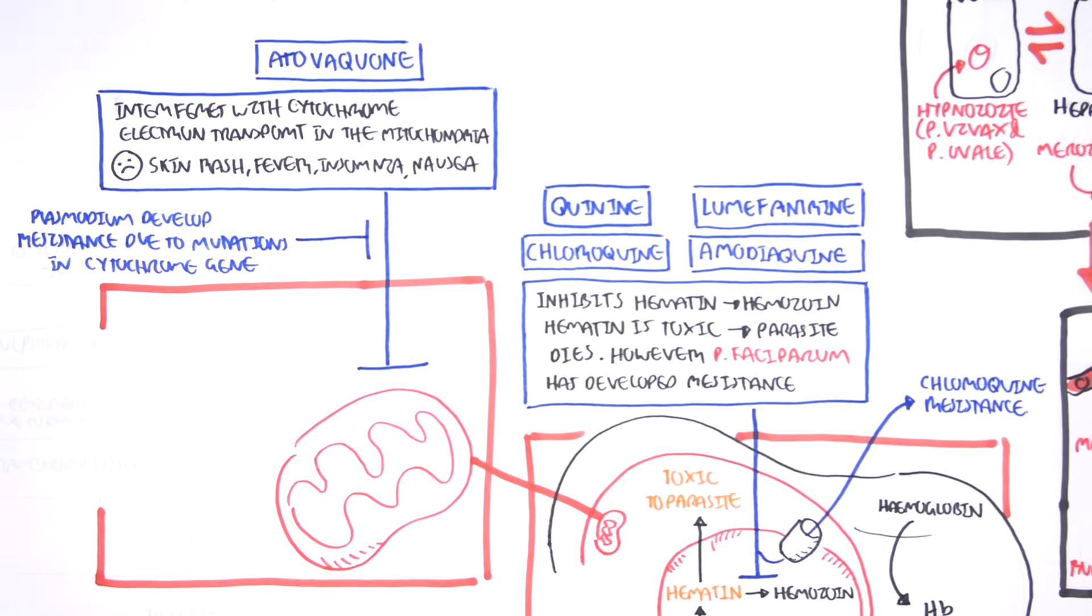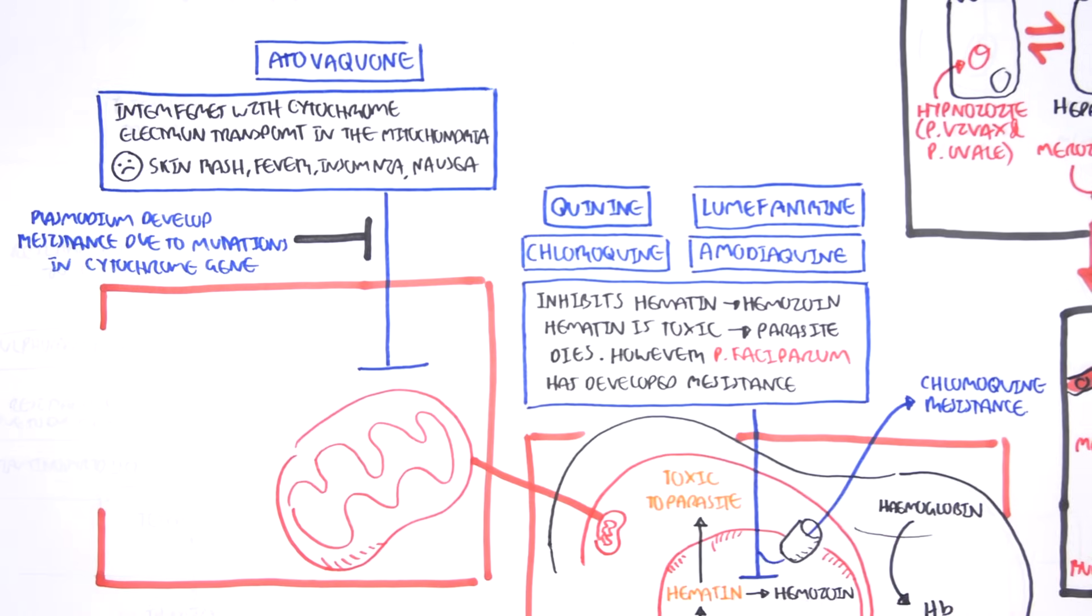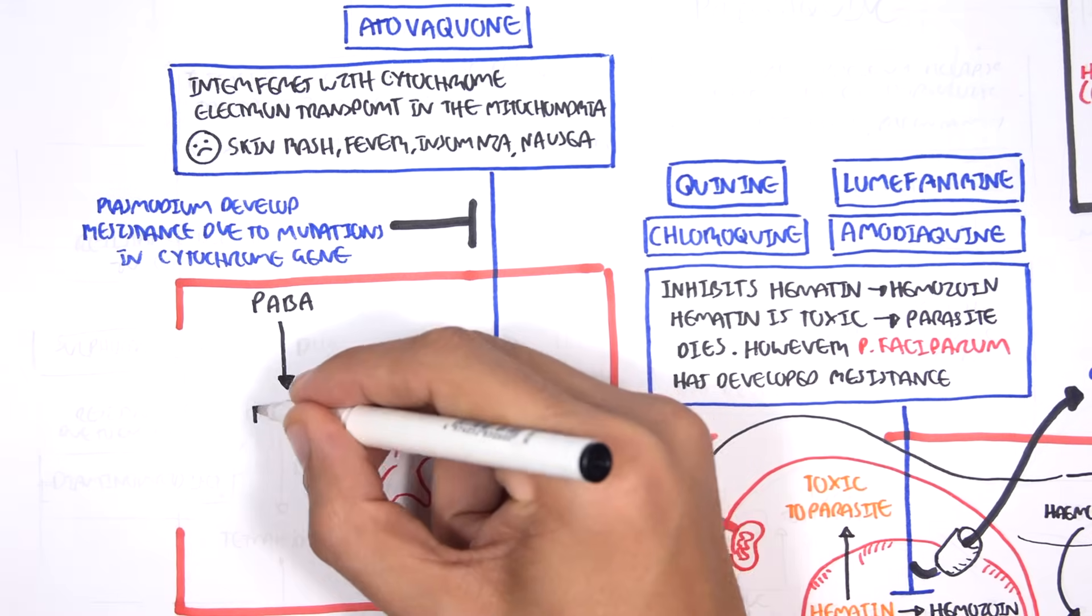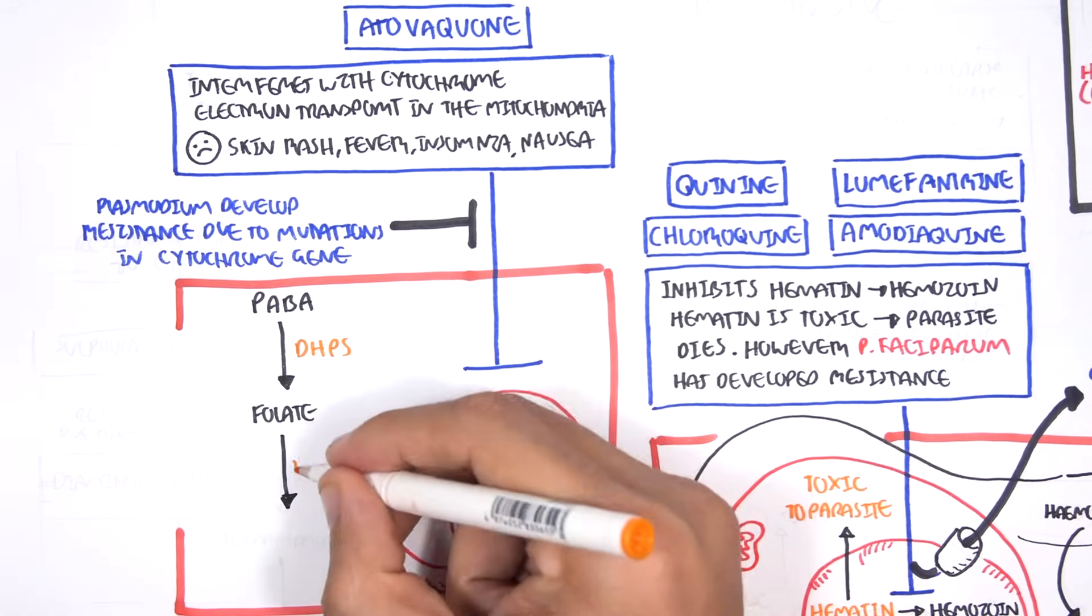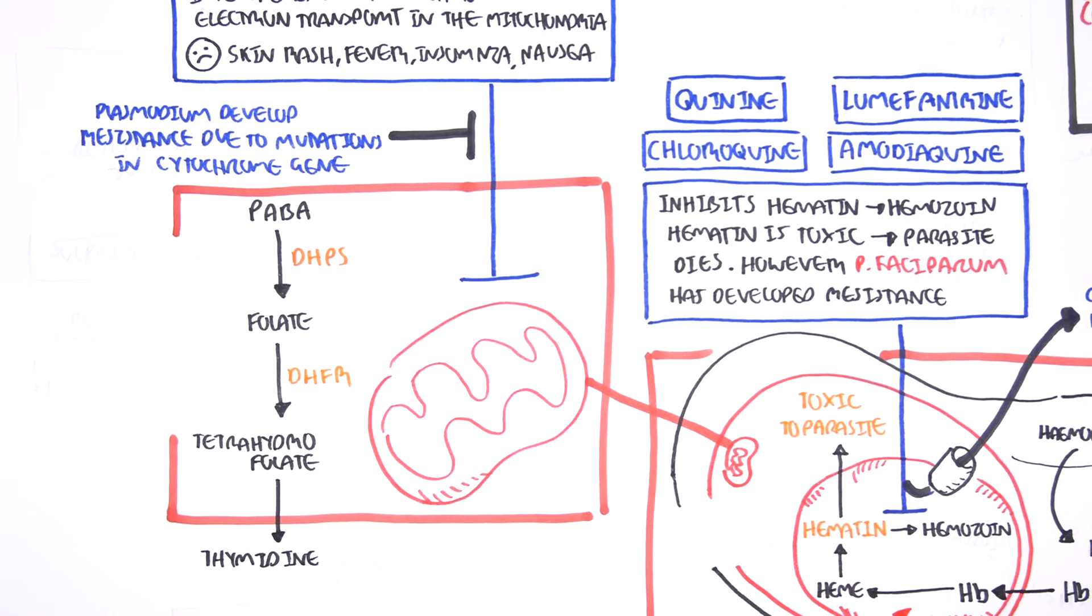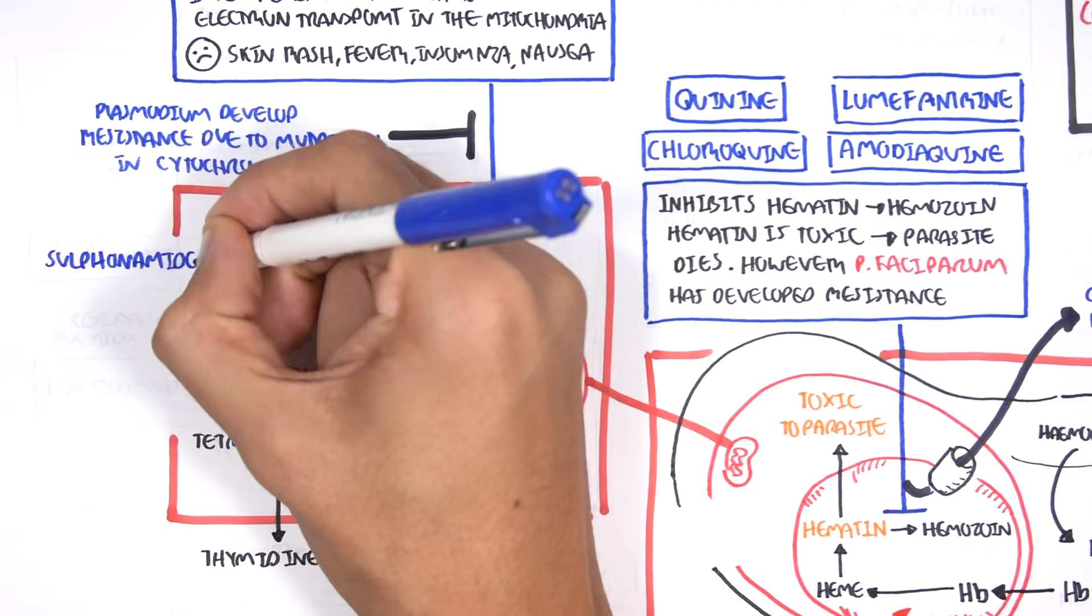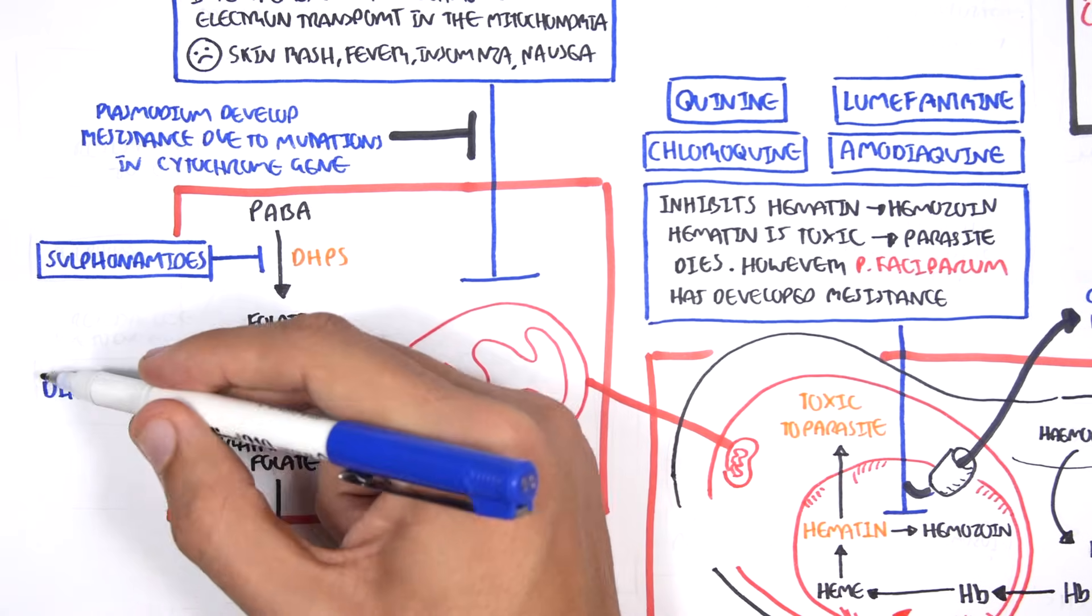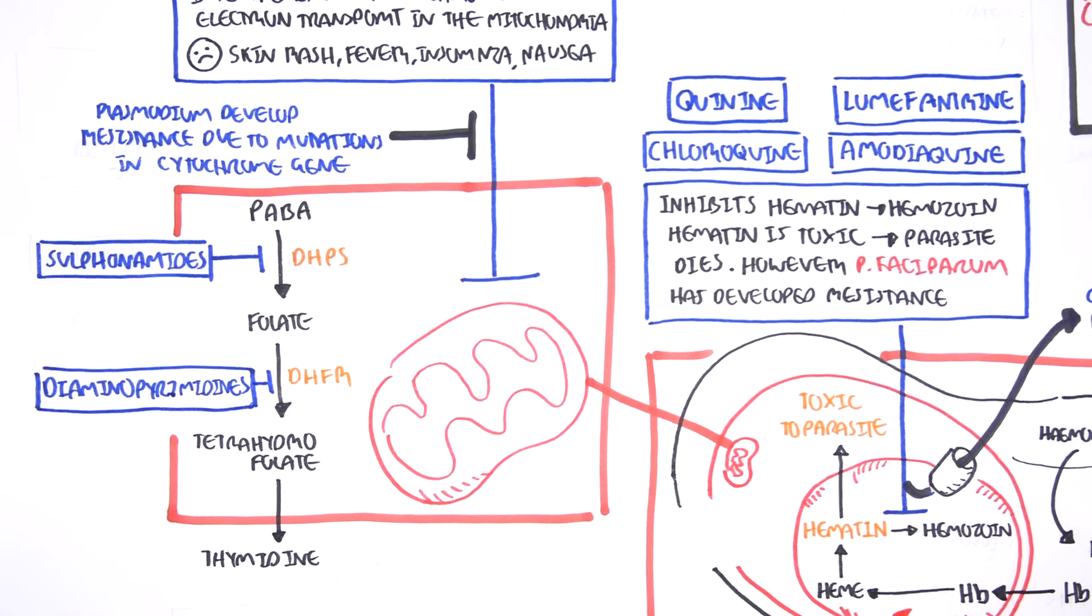The next anti-malarial drug we will talk about are the ones that target folate metabolism. The parasite can use PABA, and through the enzyme DHPS can make folate. Folate can then be converted to tetrahydrofolate through the enzyme DHFR. Tetrahydrofolate can then be converted to thymidine through several reactions. Thymidine will eventually be used for the genetic material of the parasite. Thus, if we have drugs that inhibit this process, we can kill the parasite. These drugs are also antibiotics and include sulfonamides, which inhibit the enzyme DHPS, and diaminopyrimidines, which inhibit DHFR.